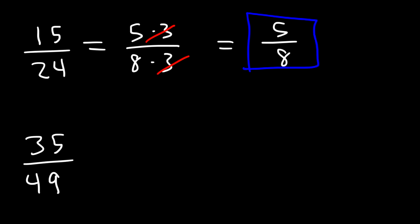Now let's move on to the next example. What do you know about 35 and 49? 35 and 49 have a common number that goes into both of them, and that is 7. 35 is 7 times 5. 49 is 7 times 7. And so we could cancel a 7, giving us the answer 5 over 7.